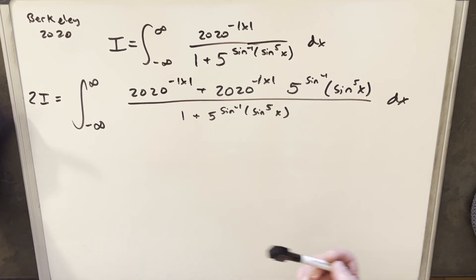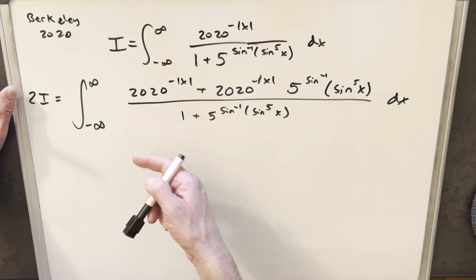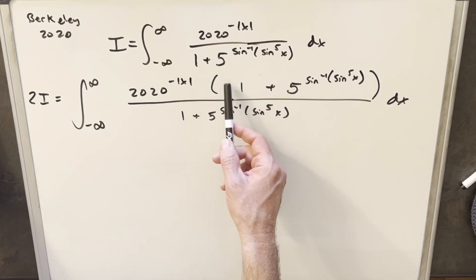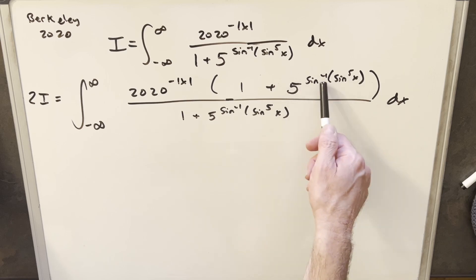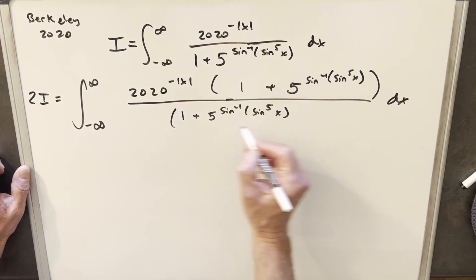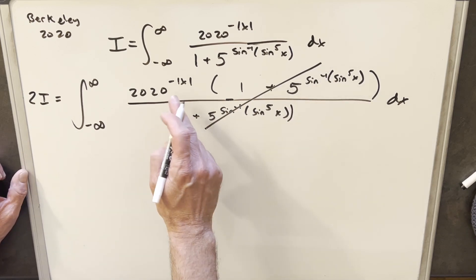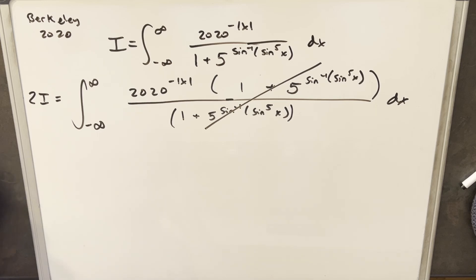When we factor our 2020 out, 2020 to the minus absolute value of x. So with it factored, now we have this 1 plus 5 to the sine term here. But this is exactly what we have here in the denominator. So we can just cancel this. And now we're just integrating 2020 to the minus absolute value of x.